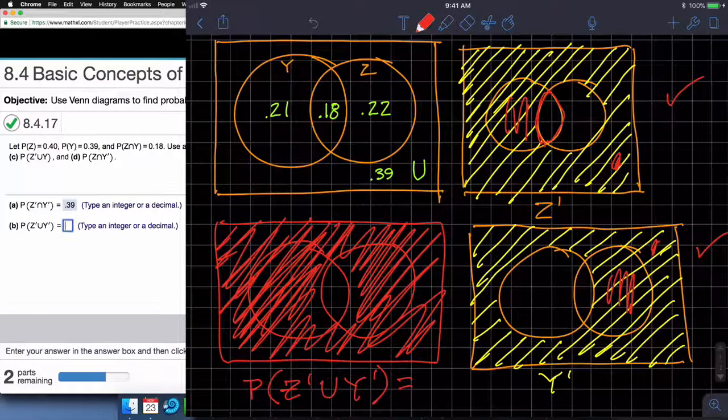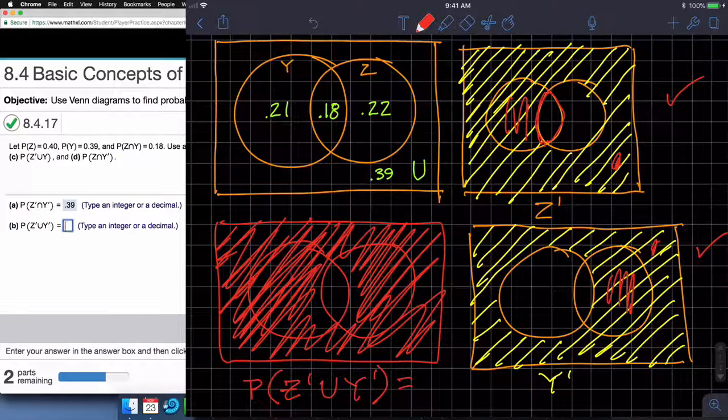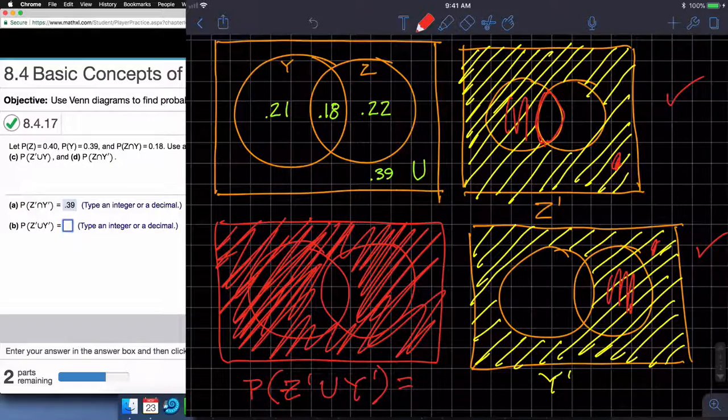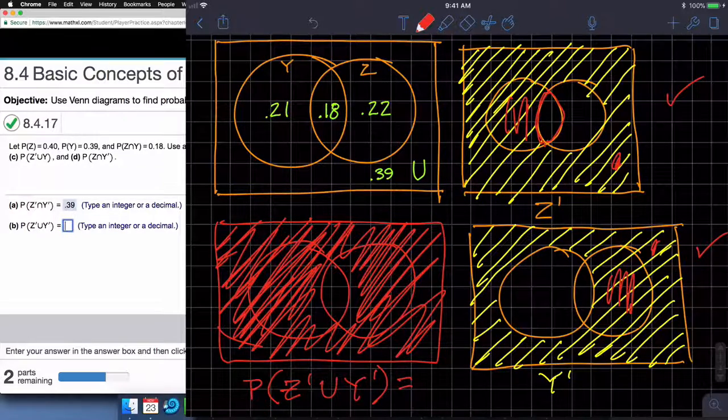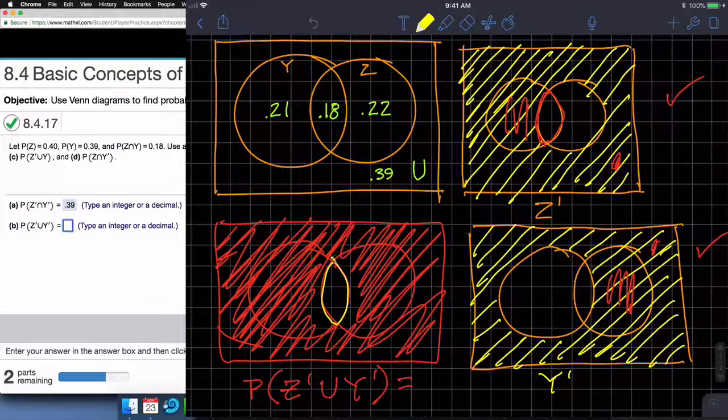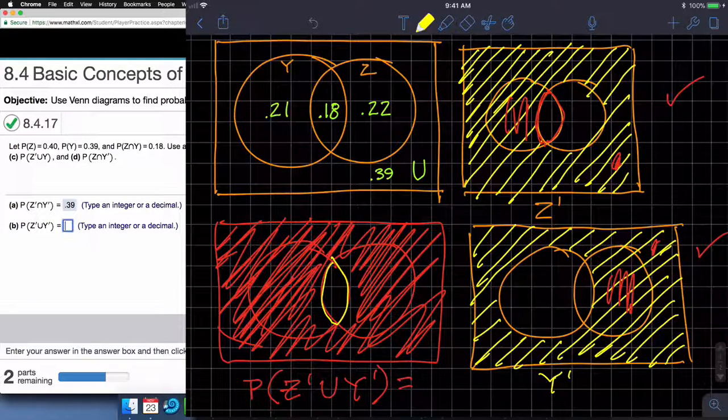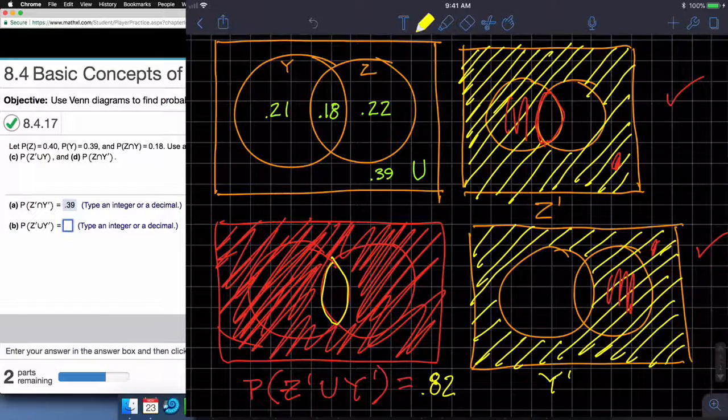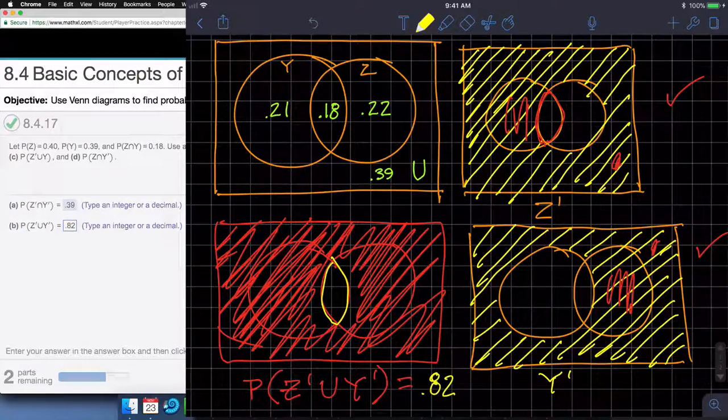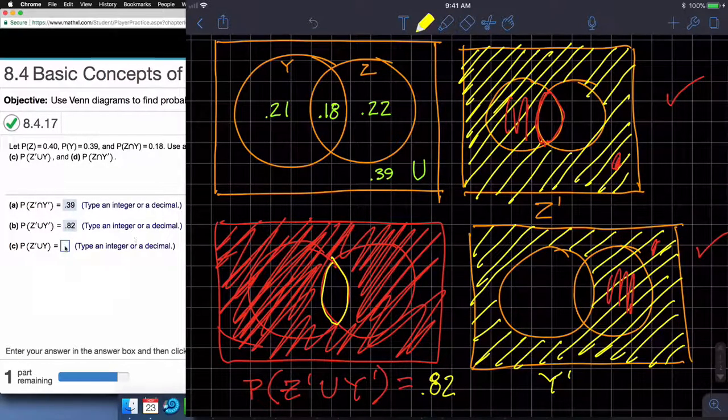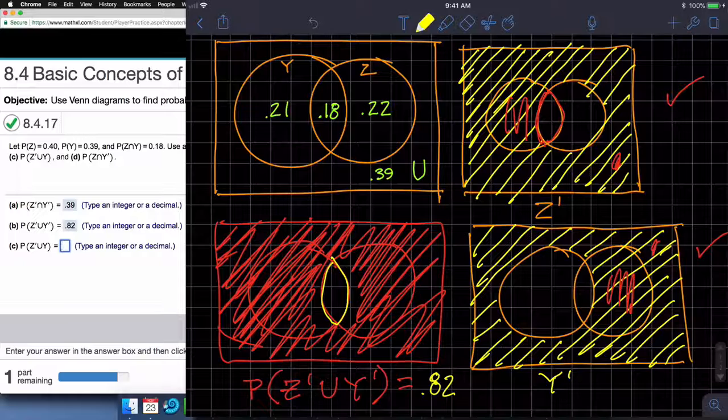So the probability of Z complement union Y complement is equal to the probability of all that stuff. Well, you can add up 0.22, 0.21, and 0.39, but I think it's easier to think of it as the whole thing is 100%, so take 1 and subtract the 0.18, and we get 0.82. And so we type in 0.82, check our answer, we get a well done. Hopefully our turkey today is well done. By the way, happy Thanksgiving, everyone.